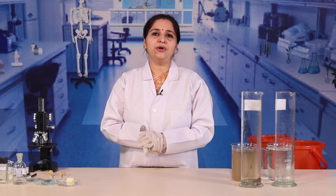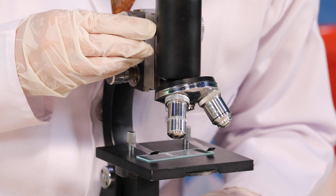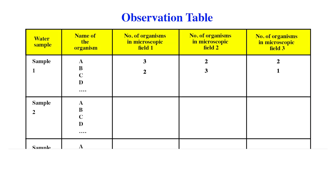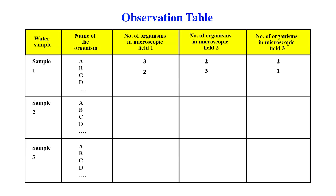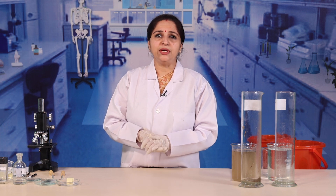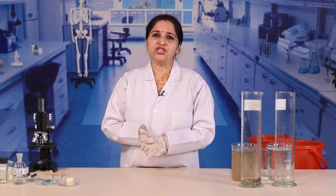Count the number of organisms in the visible area of the microscope at high power. Make an observation table. If you cannot identify any organism, you can mark it as 'A'. You can also take a photograph or draw a rough sketch so that it can be identified later using an identification key.